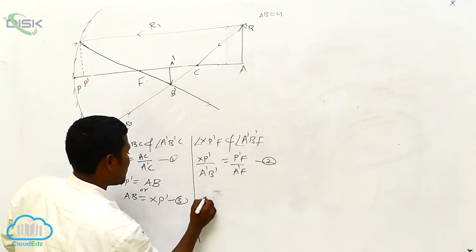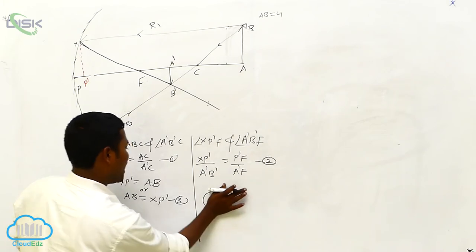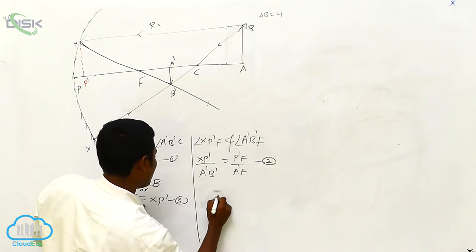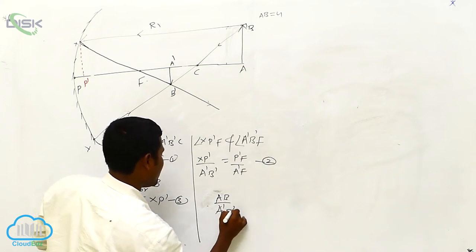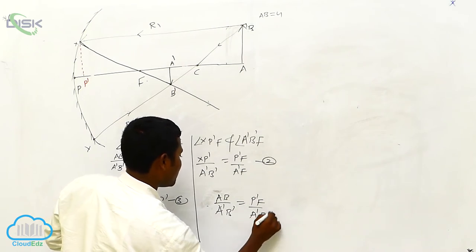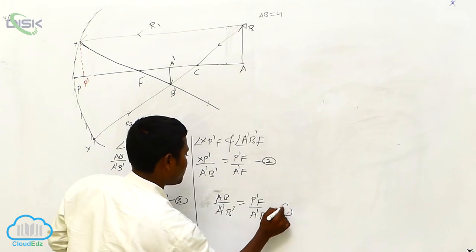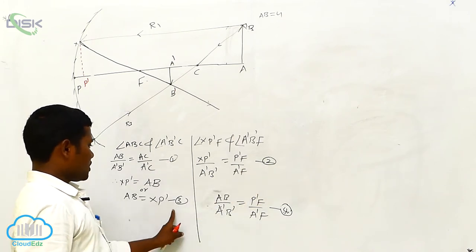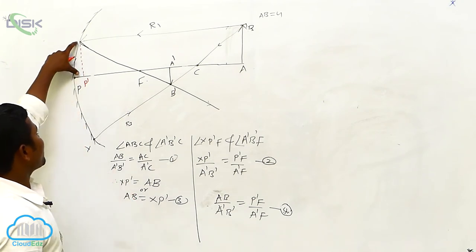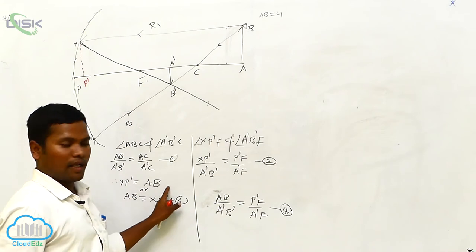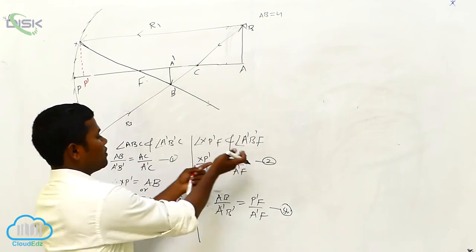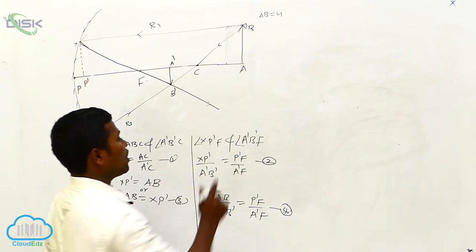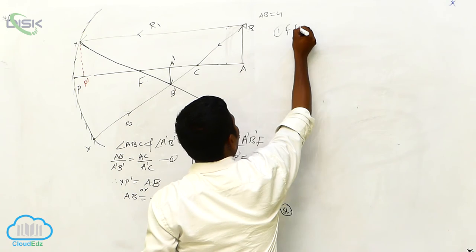Substituting XP-dash equal to AB into equation two gives: AB / A-dash B-dash equals P-dash F / A-dash F. This is equation number four. So equation one is the first, equation two is the second, equation three is XP-dash equals AB, and equation four is the combined result.